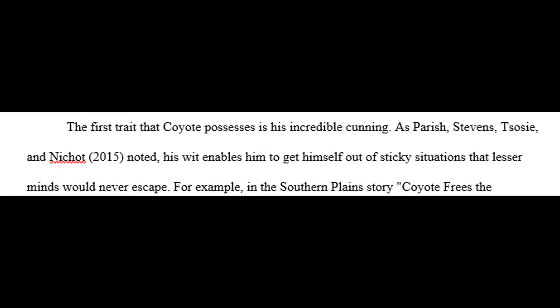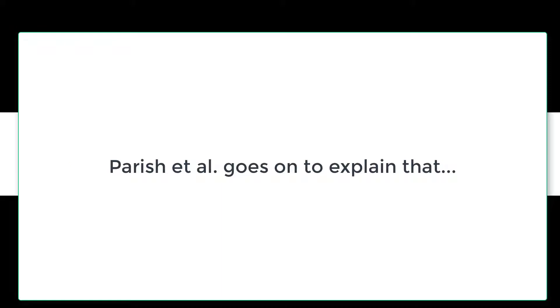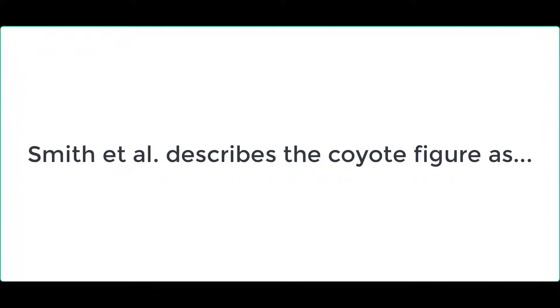When citing a work with three to five authors, you will name all of the authors in the signal phrase or the in-text citation. If you reference the source again, you will only need to use the first author's name followed by "et al.," meaning "and others." If there are six or more authors, just cite the first author followed by et al.